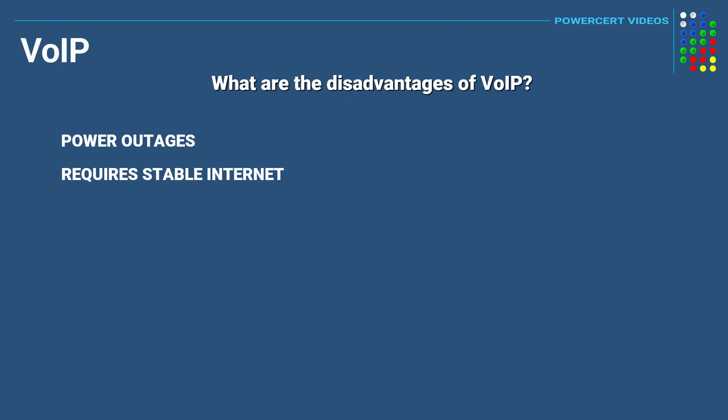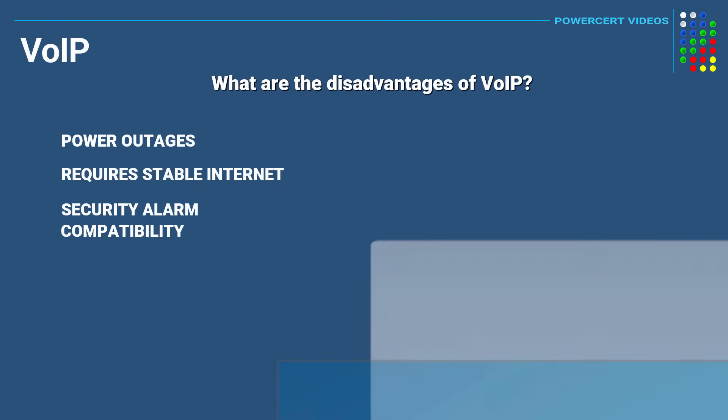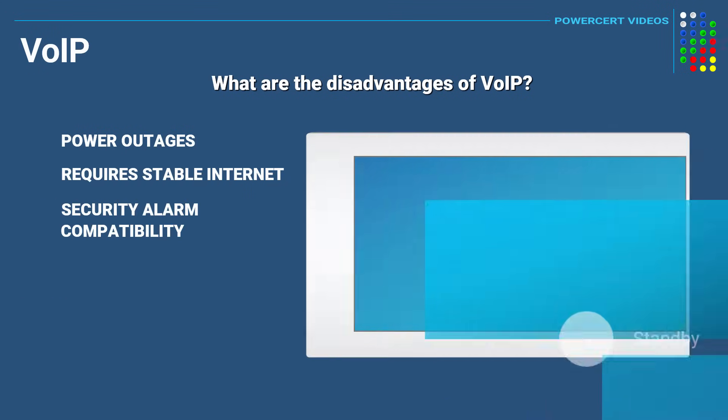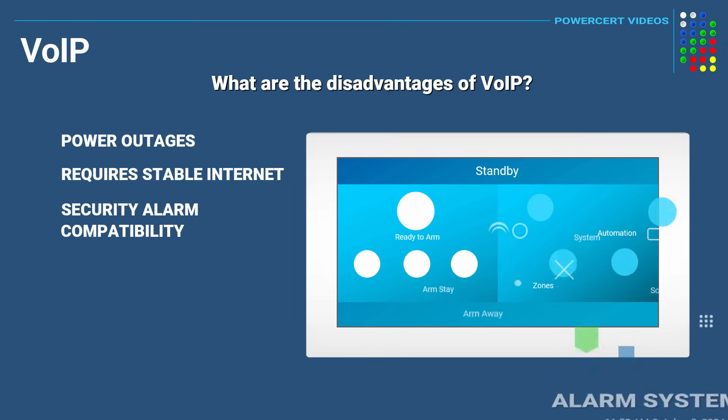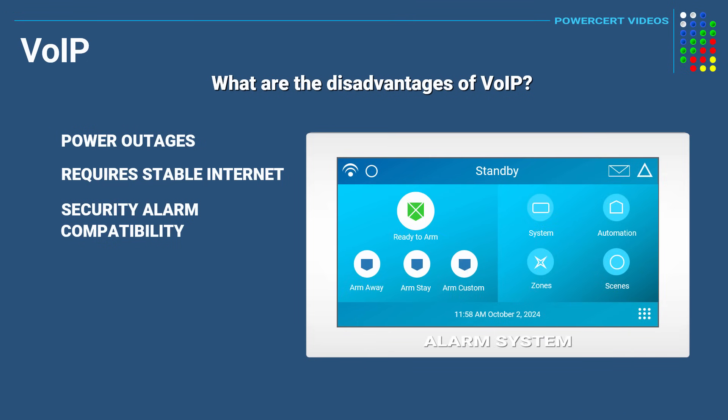VoIP may also not work with certain alarm security systems. If you want to make sure your home security system works, you need to check with your security company to see which VoIP providers are compatible.